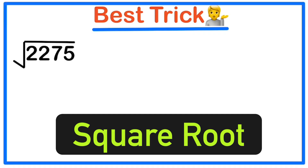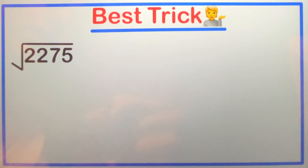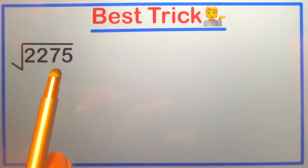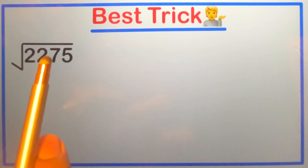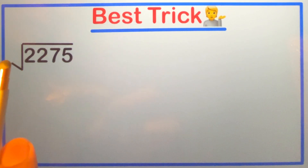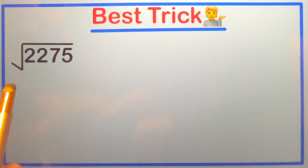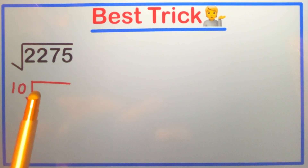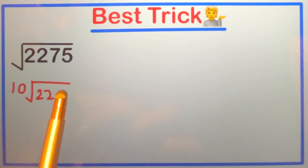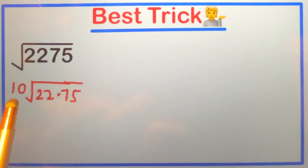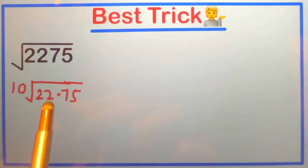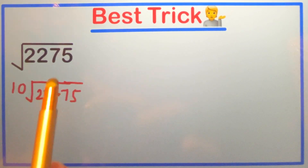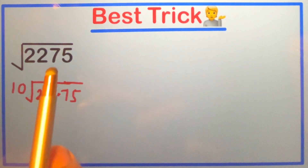To solve this question, we will put a point after two digits from the right-hand side — so after 1 and 2, we put a point here. We write 10 outside, and then after these two numbers we put a point, so it becomes 22.75. I have written it this way because if we multiply 10 inside it will become 100, and multiplying this number by 100 gives the same number — so both are equal.